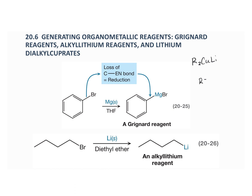We've seen where Grignard and alkyl lithium reagents can attack epoxide carbons to open rings, and we've seen how these reagents undergo nucleophilic addition to the carbonyl group of a ketone or aldehyde — from Chapter 11 and more recently from Chapter 18. The R⁻ from a lithium dialkyl cuprate favors conjugate addition to an alpha-beta-unsaturated ketone or aldehyde, which we saw in Chapter 18.